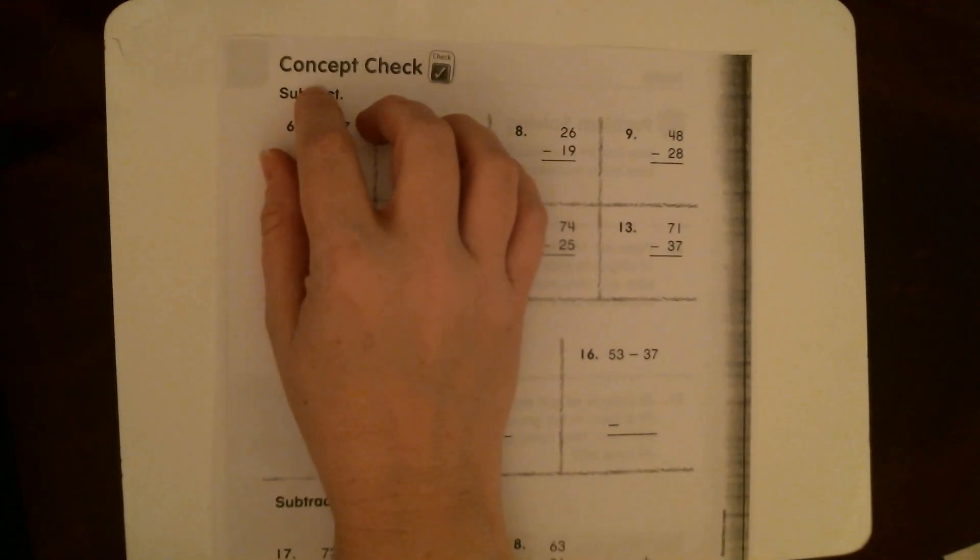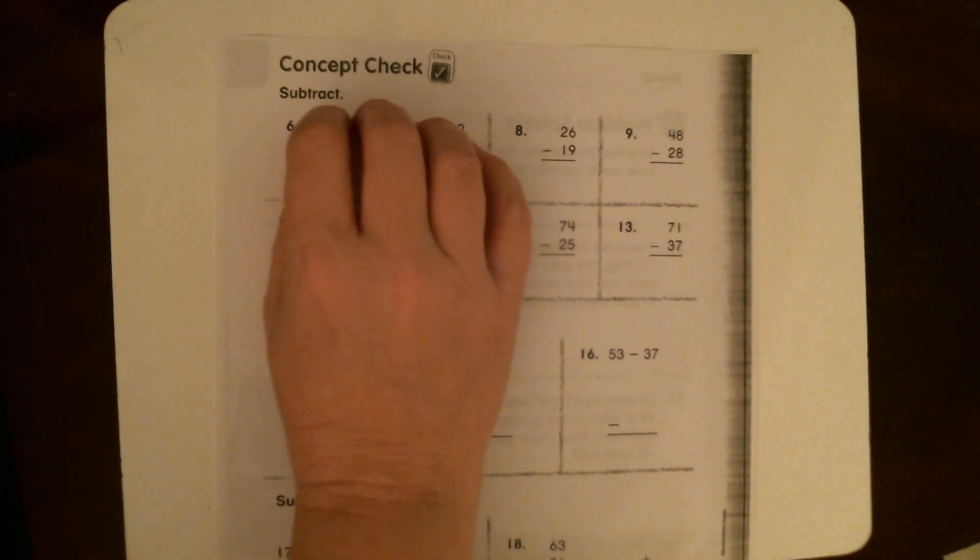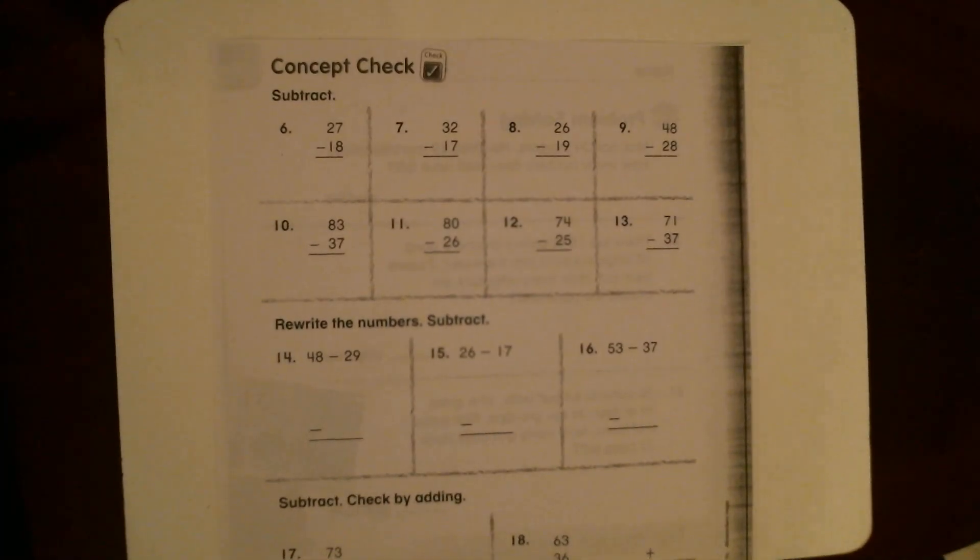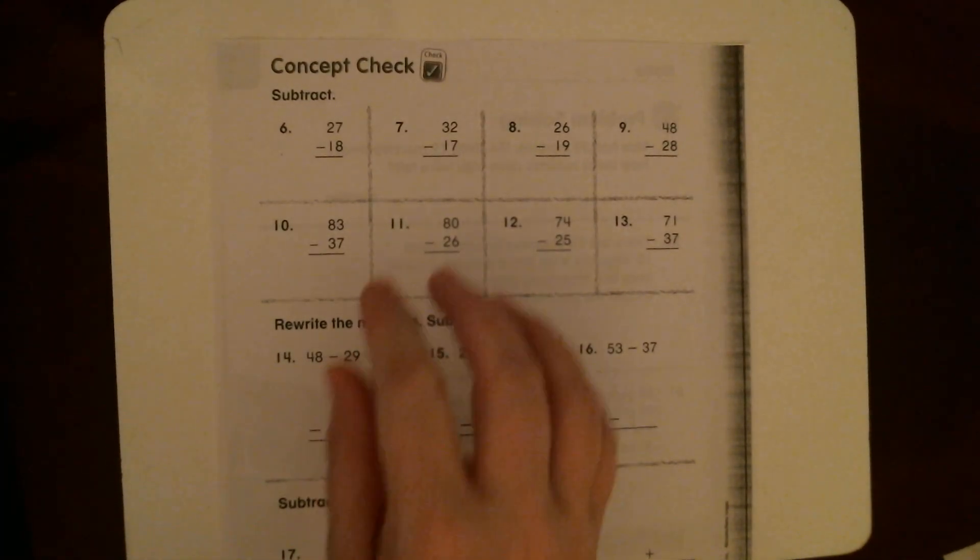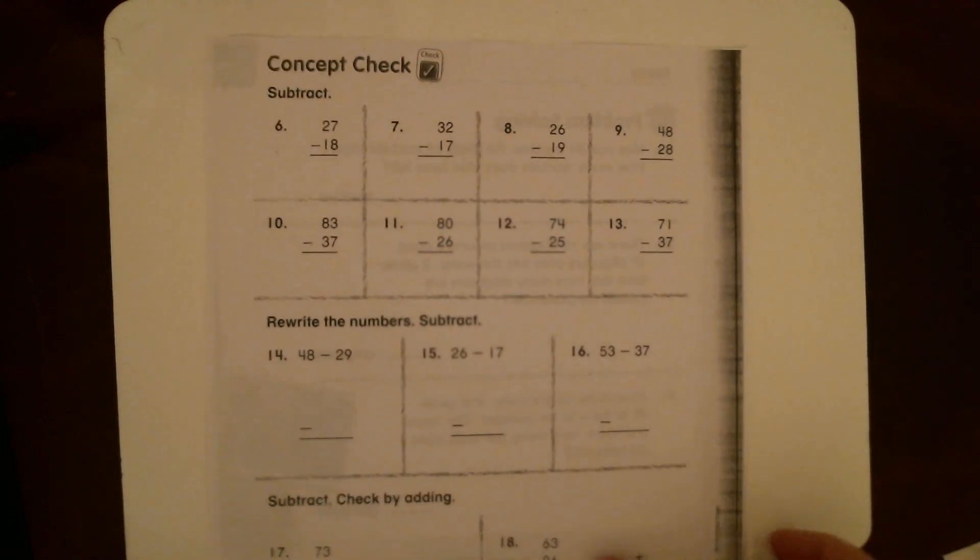Hey guys, for your math lesson today it's actually going to be a review lesson of what we've already worked on before. This is our two-digit subtraction with and without regrouping. Let's practice a couple problems together. If you need to pause the video you can, but I want you to get your whiteboard, your marker, and whatever eraser or tissue you have, and we're going to practice some problems.